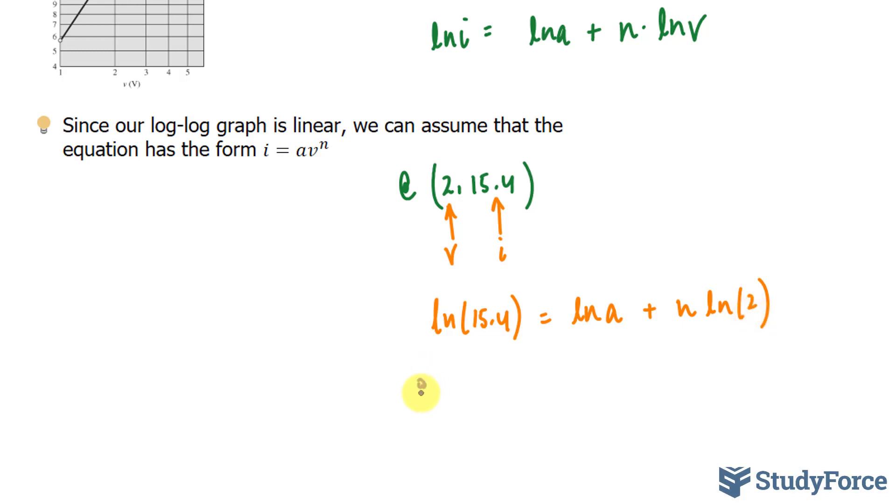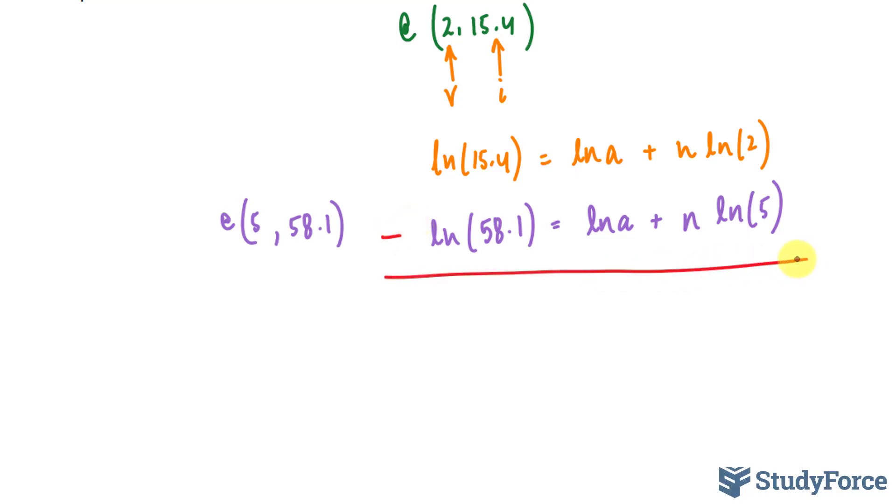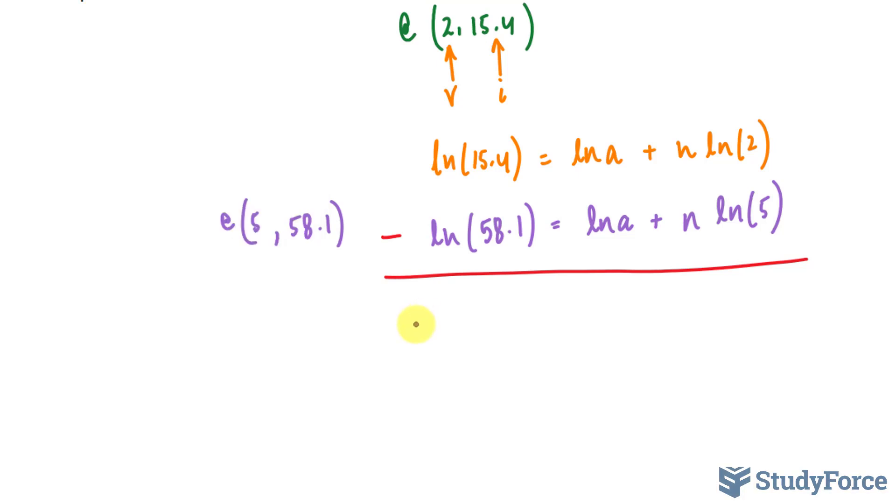So, this time, we have at 5 and 58.1, I'm going to rewrite these right underneath one another. To solve for either a or n, I'm going to start off by subtracting the top equation with the bottom equation. If I subtract the two, let's start off with this one. ln of 15.4 minus ln of 58.1 is equal to negative 1.327.